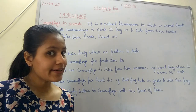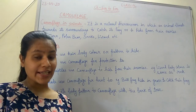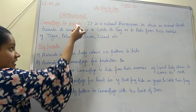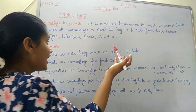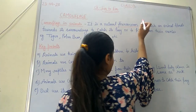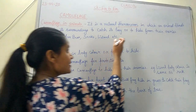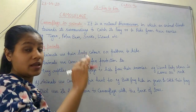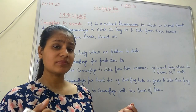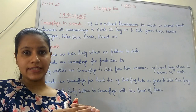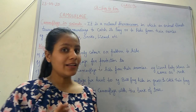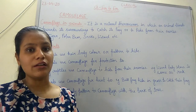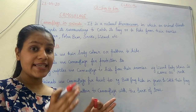We know that some animals use their body color or their body pattern to hide or to blend with their surroundings. Camouflage in animals is a natural phenomenon in which an animal blends with its surroundings. For example, the lizard — its color is brown, the same as the color of a rock, so it totally blends with its surrounding.